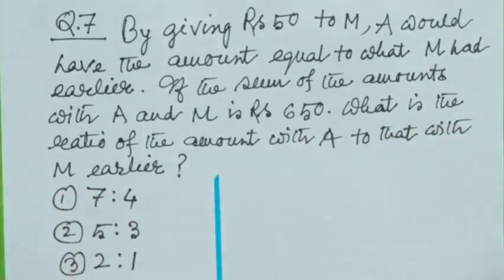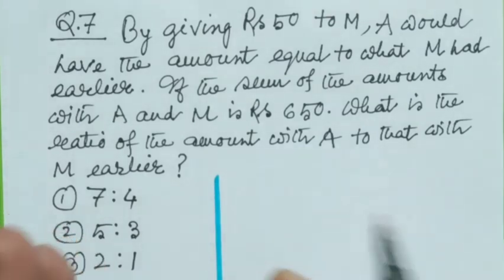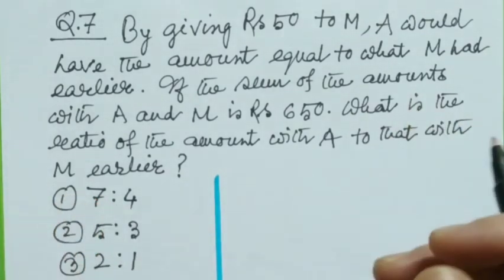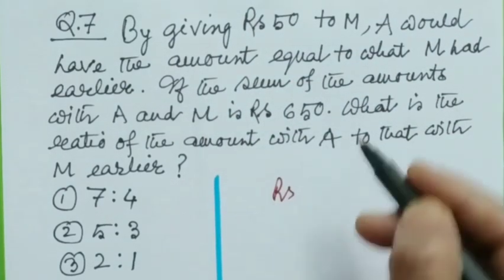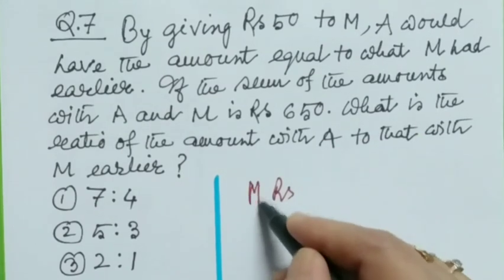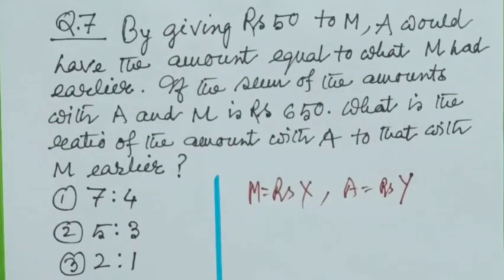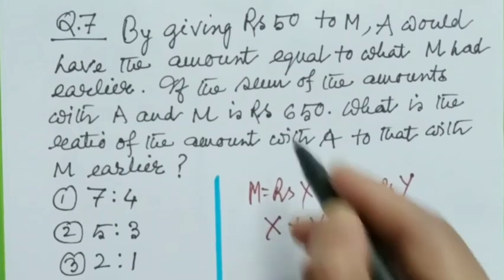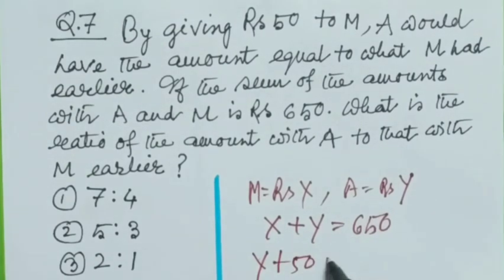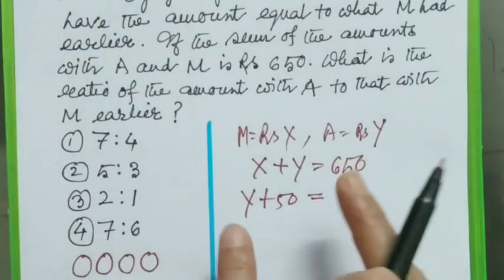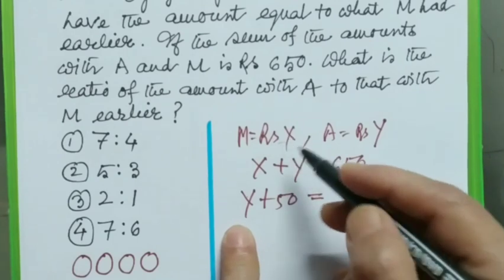Question number 7. By giving rupees 50 to M, A would have the amount equal to what M had earlier. If the sum of the amounts with A and M is rupees 650, what is the ratio of the amount with A to that with M earlier? Here two conditions are given. The first condition is that the sum of amounts is rupees 650. Let us take the amount of M is rupees x and amount of A is rupees y.